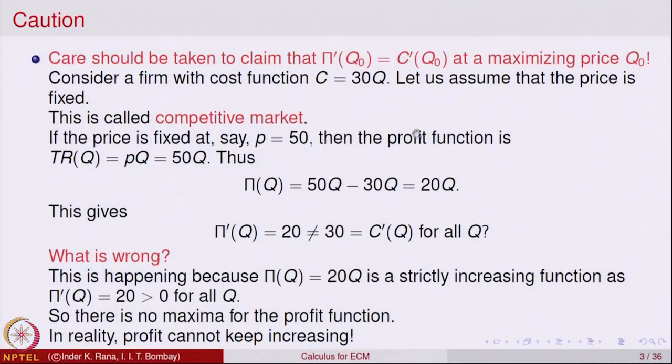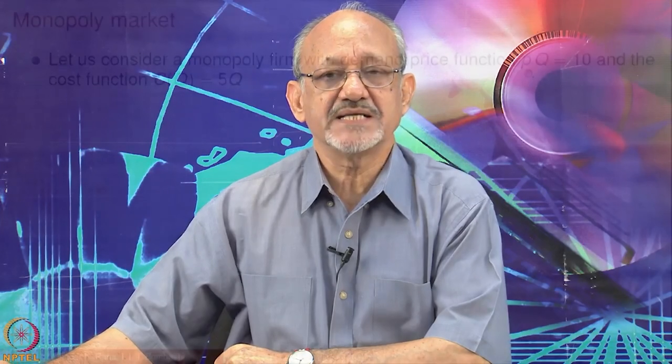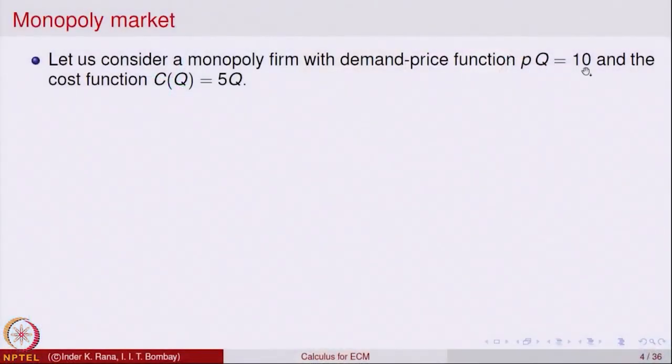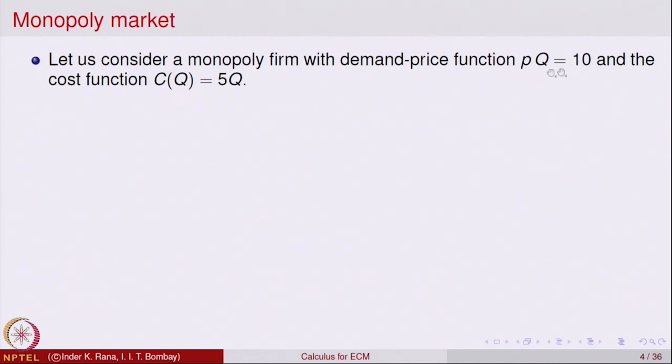If Q0 is a point of maximum then this relation holds, but if there is no point of maximum then the relation need not hold. Let us look at another example, normally called the monopoly market. Consider a monopoly firm with demand and price given by P times Q equal to 10, where P is the price and Q is the quantity produced, and the cost function is equal to 5Q.